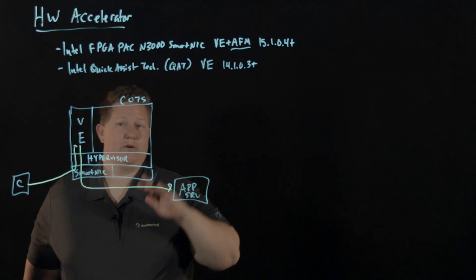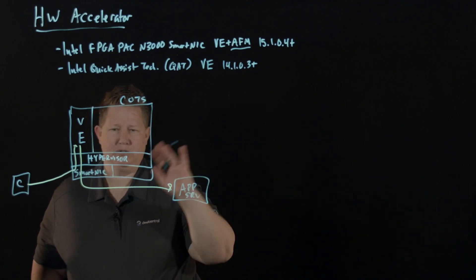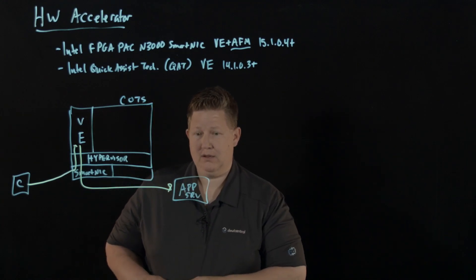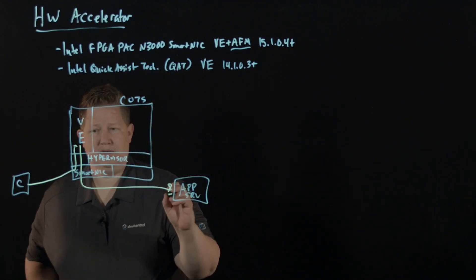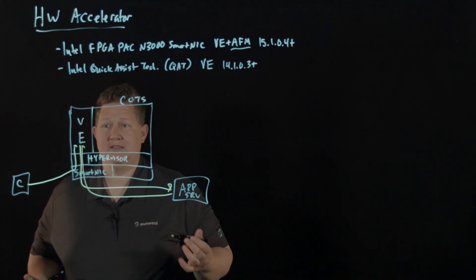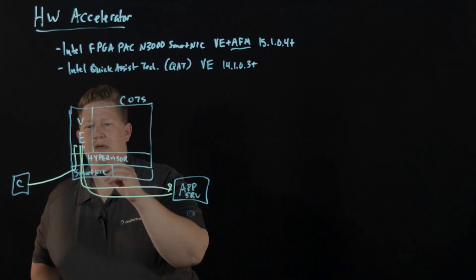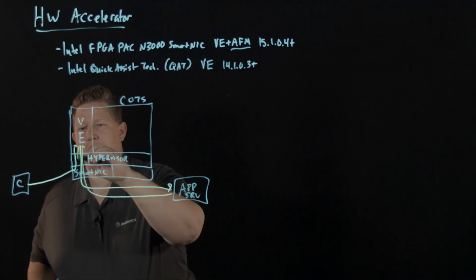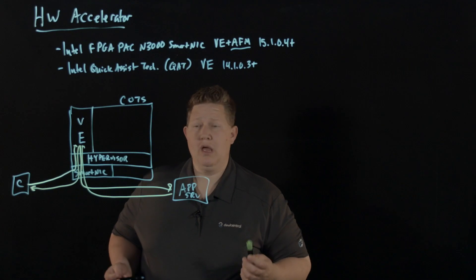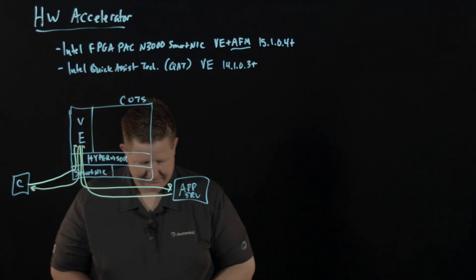And that app server may live on this server, it may be on a different server, but we'll just assume it's off server for this. And then that app server gets the traffic, sends it back. And then VE does what VE does in the response traffic. And if everything's good, send that back to the client. And so it does that at scale for any number of clients that are out there.